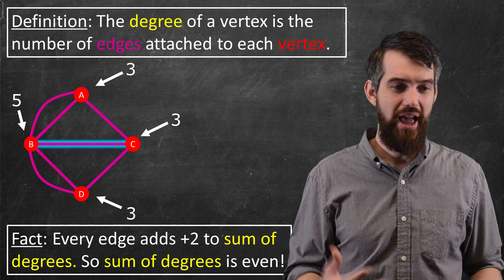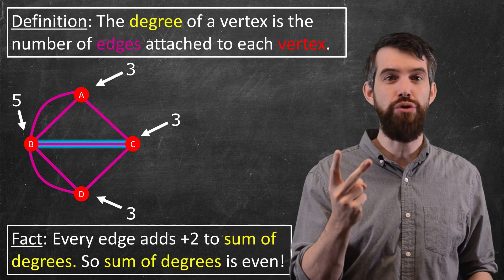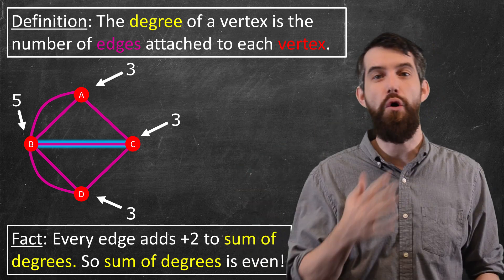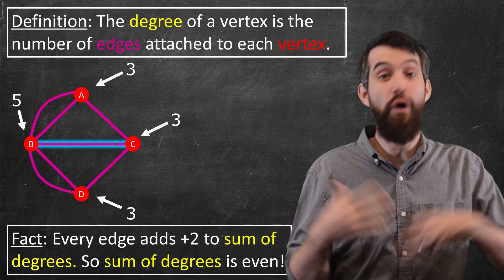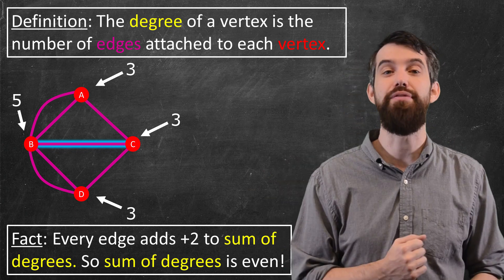So this is a key fact. Every time you add an edge, you add plus two to the sum of the degrees of all the different vertices. And so, therefore, the sum of the degrees of all the vertices has to be an even number.